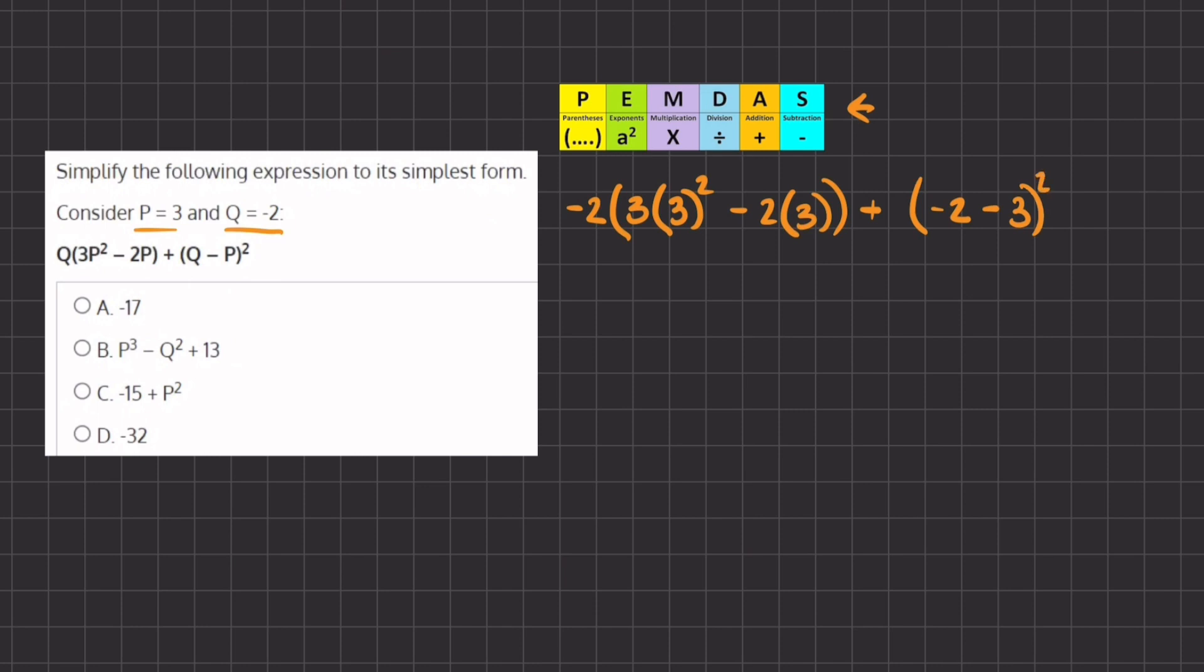Let's simplify this parentheses first. We have negative 5 to the power of 2. Now let's solve the inside of this parentheses. We have negative 2 on the outside, and our inner parentheses is 3 times 3 to the power of 2, which gives us 9, minus 2 times 3, which gives us 6, plus our parentheses here, which is negative 5 to the power of 2.